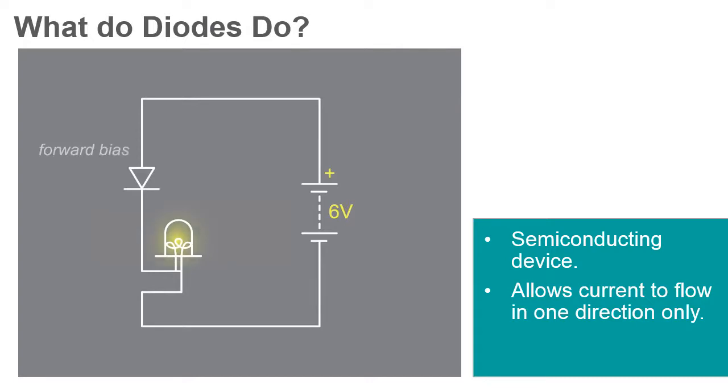When the diode is in forward bias, the diode allows current to flow from the anode to the cathode. In reverse bias, current is blocked so there is no flow of electricity through the circuit.